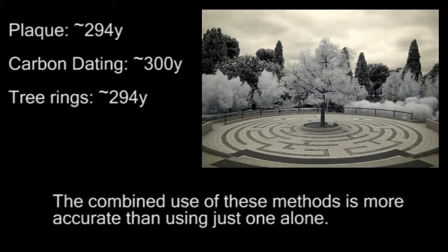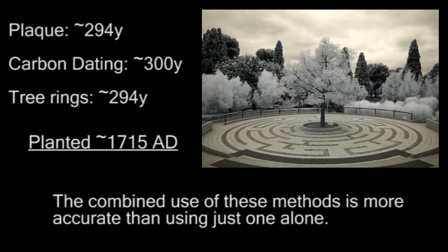The point I'm trying to illustrate is that with each independent method of data collection with a matching result, the higher the probability of accuracy becomes. The carbon dating and dendrochronology provide a higher probability of accuracy than the tree's historical significance alone. Now let's move on to evolution.